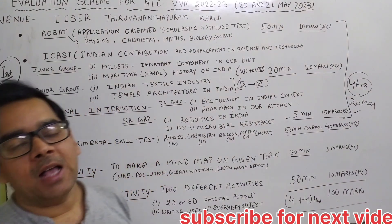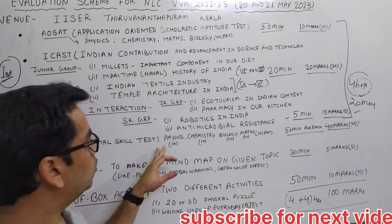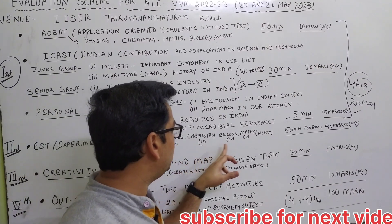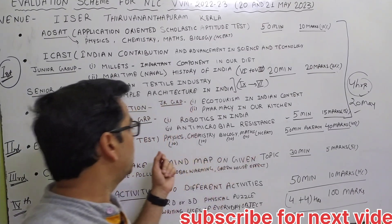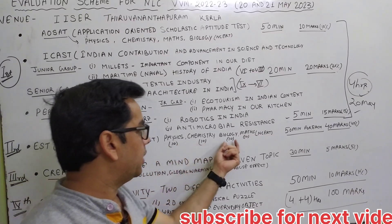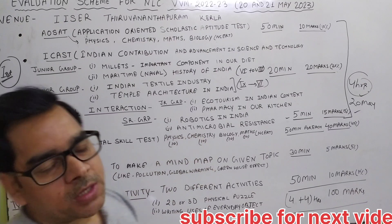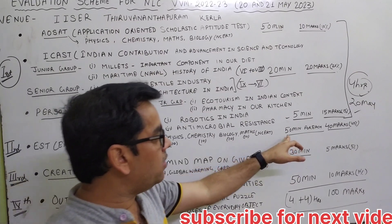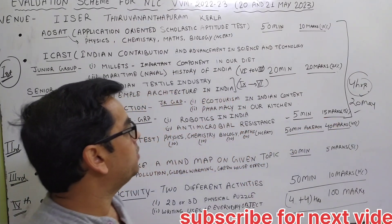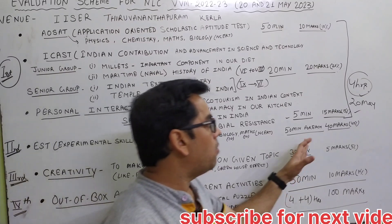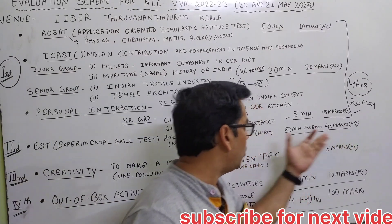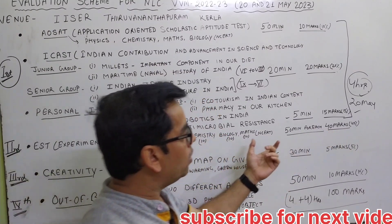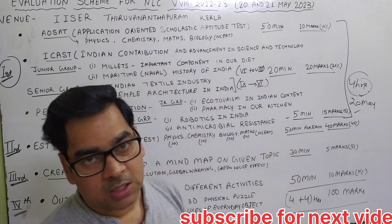The Experimental Skill Test is also the same as in the state level camp. You have to carry out one activity each from physics, chemistry, biology, and maths. Marks given for each activity is 10 marks, and these activities are based on the NCERT syllabus of your respective class. 50 minutes is given for each experiment, and the total marks allotted for EST is 40 marks — 10 for each section.